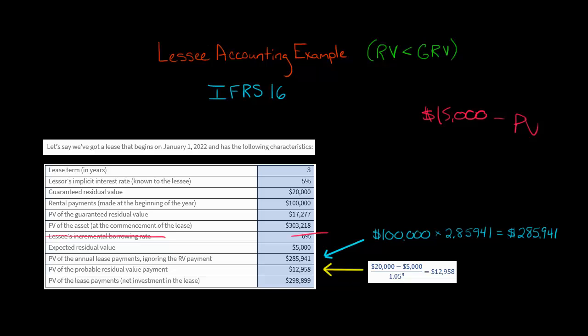That $285,941 is not the present value of all the lease payments — that's ignoring the residual value payment. We also have the present value of the residual payment: the $20,000 minus $5,000 shortfall, which is $15,000. We discount it by dividing by 1.05 to the third power because it's three periods. That gives us $12,958, which is the present value of that $15,000 shortfall.